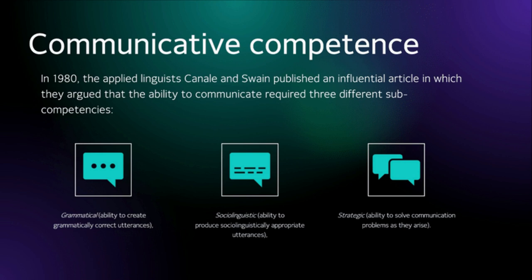In 1980, the applied linguists Cannell and Swain published an influential article in which they argued that the ability to communicate required three different sub-competences. These are: first, Grammatical — the ability to create grammatically correct utterances; Sociolinguistic — the ability to produce sociolinguistically appropriate utterances; and Strategic — the ability to solve communication problems as they arise.